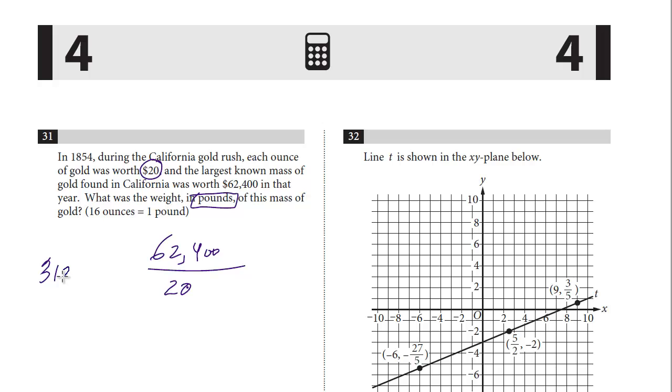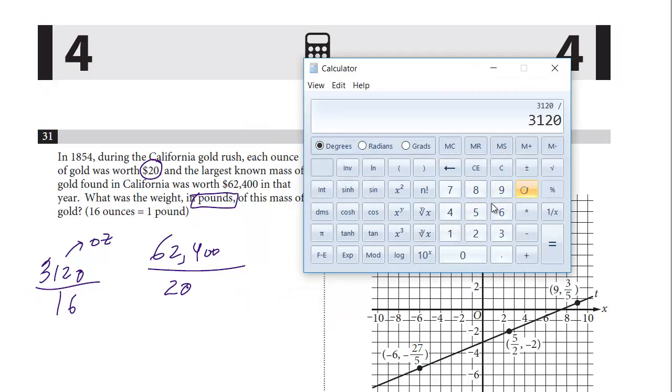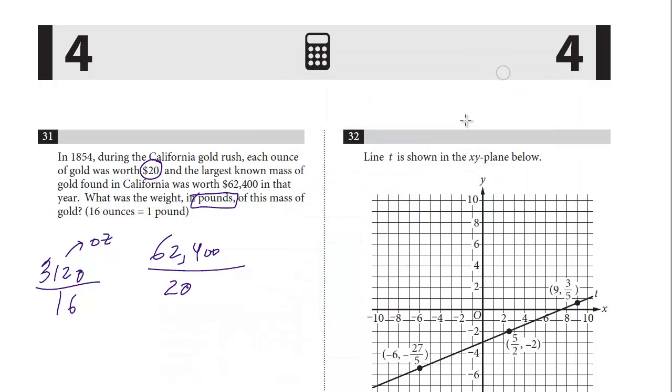Now remember, this is ounces, and so we want to convert that into pounds. They give us the conversion: 16 ounces in a pound. So we just divide this by 16, and that will yield our answer, 195, and that's what we're going to grid in.